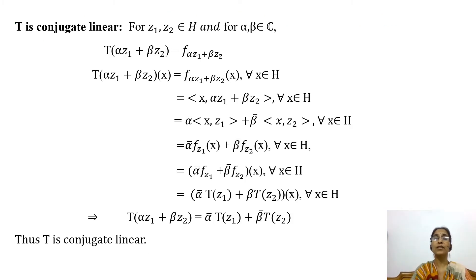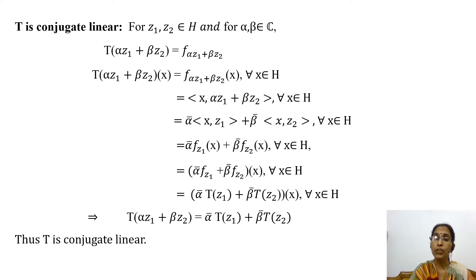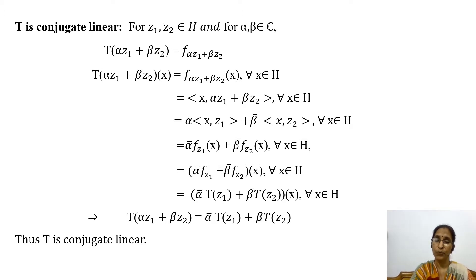Now we will show that T is conjugate linear. For Z1, Z2 in H and alpha, beta in C — the set of all complex numbers — alpha Z1 plus beta Z2 belongs to H. By definition of T, we have T of (alpha Z1 plus beta Z2) equals F_(alpha Z1 plus beta Z2). Since these are bounded linear functionals on H and agree on each element of H, we can write T of (alpha Z1 plus beta Z2) of X equals F_(alpha Z1 plus beta Z2) of X for every X in H.